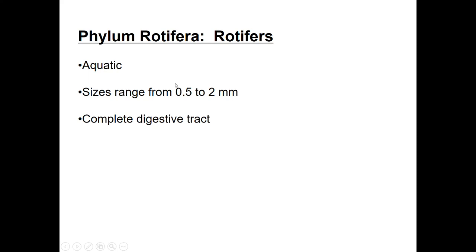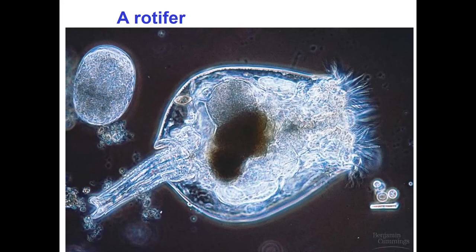Phylum Rotifera — these are rotifers, like what baby fish eat. They're aquatic; size ranges from 0.5 to 2 millimeters, and they have a complete digestive tract. They're adorable — I like rotifers.